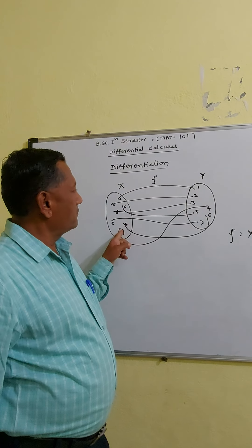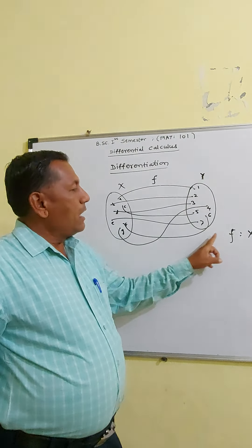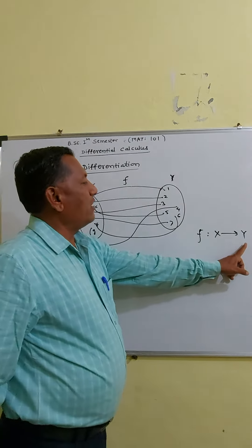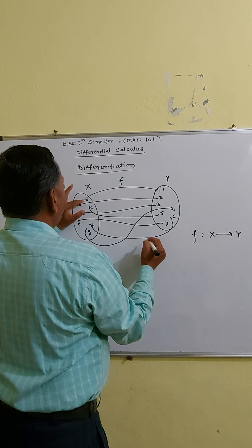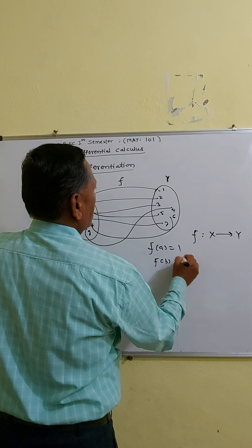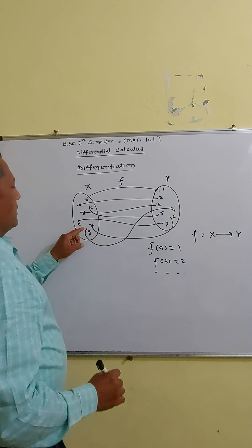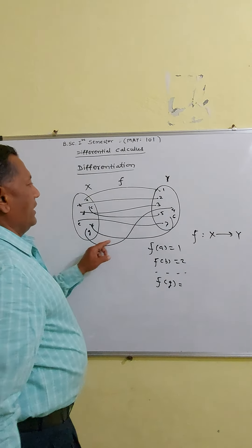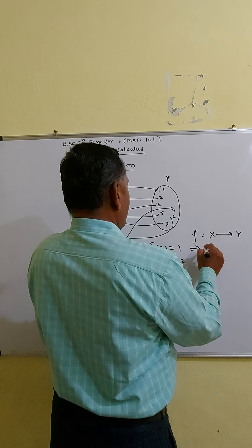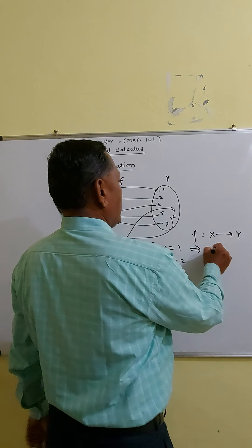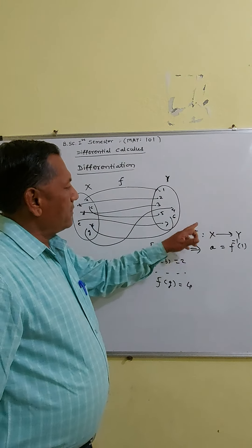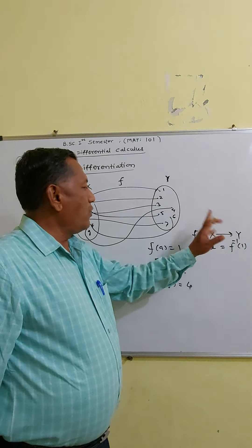Here, F is a function from X to Y such that every point of X associates with every point of Y. It can be denoted as F defined from X to Y. Here, X is the domain of that function and Y is the codomain. A, B, C, D, E, F, G are points of the domain. The image of A under F is 1, so F(A) = 1; F(B) = 2; and so on, the image of G is 4. This can also be written as A = F⁻¹(1), meaning the inverse image of 1 is A. So remember: F is a function from X to Y, X is the domain, and Y is the codomain.